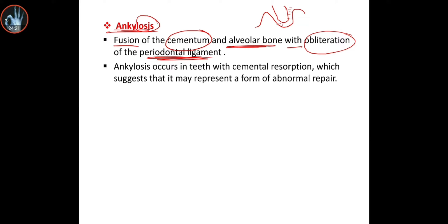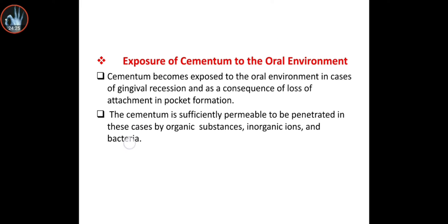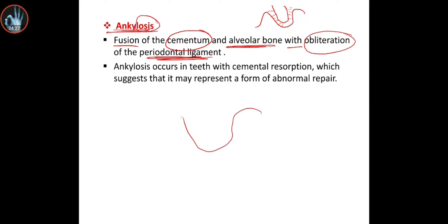We have something called periodontal ligaments. So ankylosis is when the alveolar process and the teeth are directly attached - no periodontal ligaments, no space, it's attached. Fusion of the cementum with the alveolar bone and obliteration of periodontal ligaments.